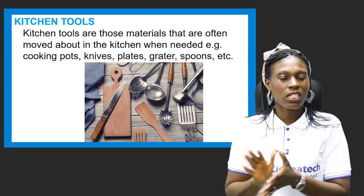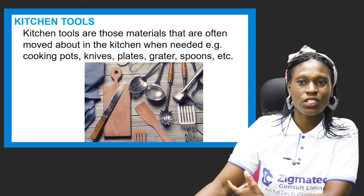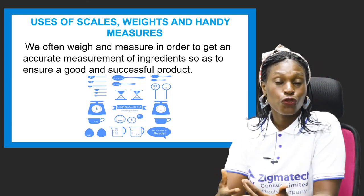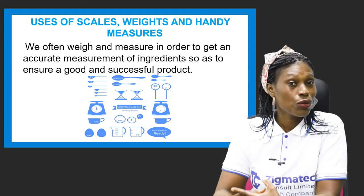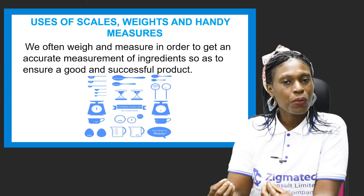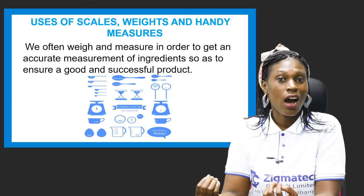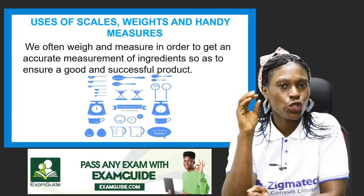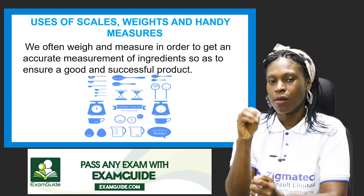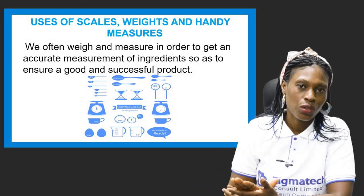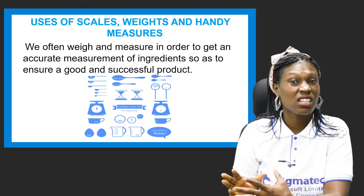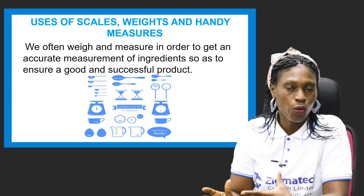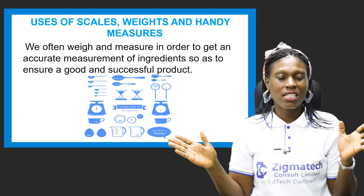Measurement in the kitchen is very important. If you're going to be a food and nutrition student, you have to learn to measure accurately. When you're given recipes — say, to prepare a cake — you have to follow the recipes. Measurements will be in grams, kilograms, or milligrams. If you don't follow through with your measurements, you're not going to get a successful product; it might not turn out as expected.